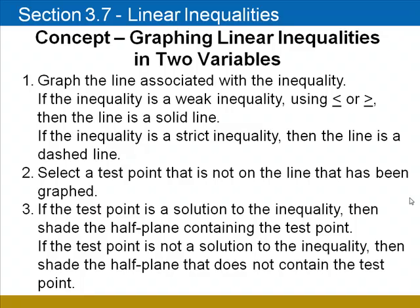We begin by graphing the line that's associated with the inequality. If the inequality involves the symbol less than or equal to, or greater than or equal to, we'll graph the line using a solid line. If the inequality is a strict inequality involving the symbols just less than or greater than, then the line is going to be graphed using a dashed line.